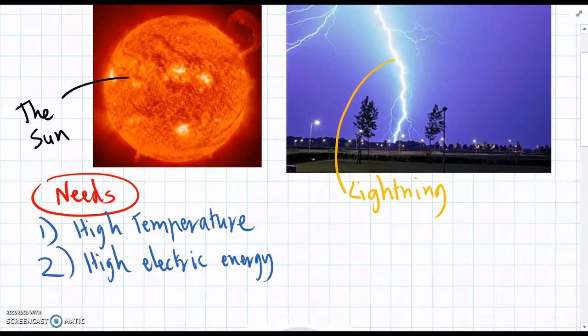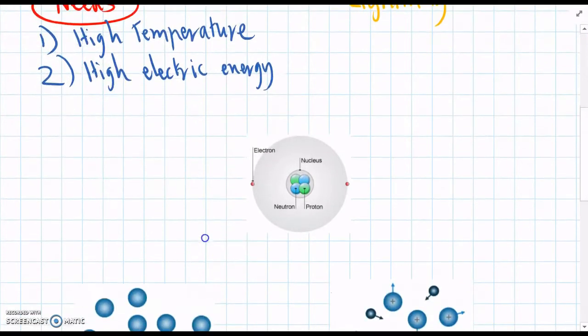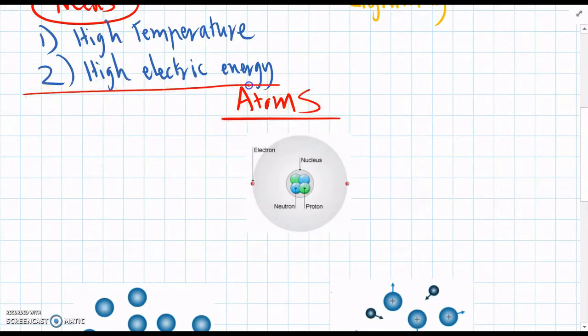So the next thing we'll do is understand how plasma actually gets made. And to do that we need to go back and have a look at atoms. So remember atoms are the particles that make up all matter, they're the smallest whole particles.